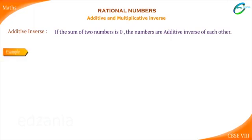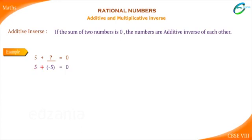Children, 5 plus which number is equal to zero? You may feel, how can addition of two numbers be equal to zero? But what is 5 plus minus 5? Yes, it is zero. That is, 5 plus minus 5 equals zero. That means minus 5 is the additive inverse of 5.